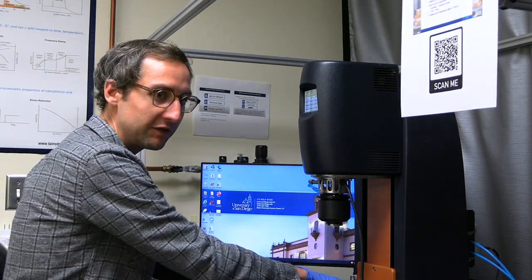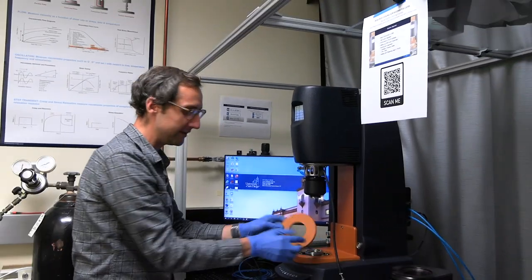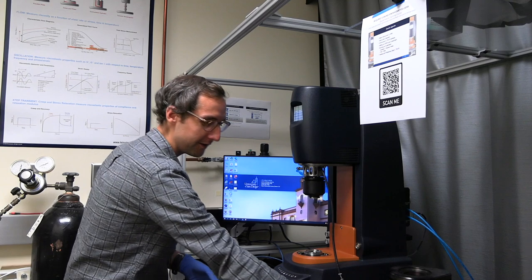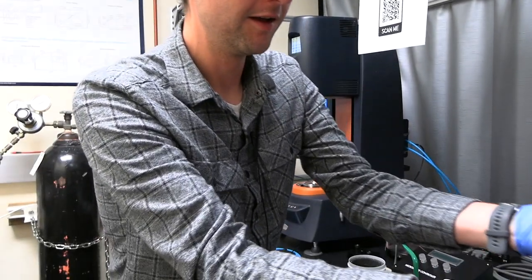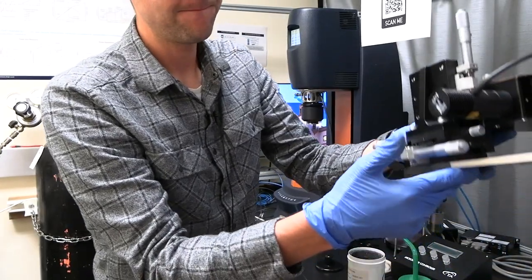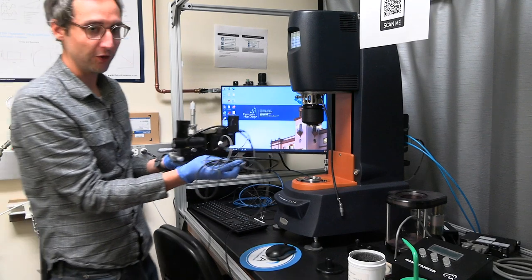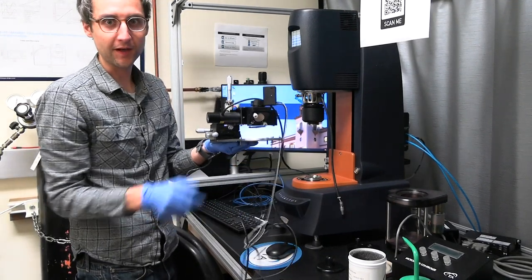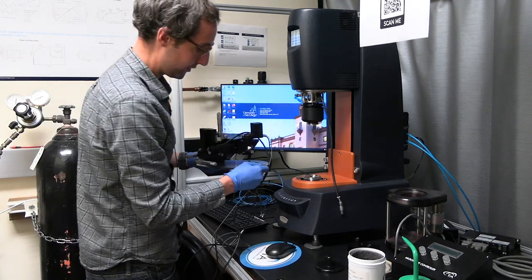Alright, so now we'll put on the base for the microscopy attachment. So this piece gets unscrewed. You can just put it on the side. And we'll put on our microscope base. So when you're holding this, just make sure to hold it from the kind of metallic base. There's three screws here, which attach.